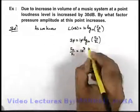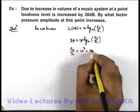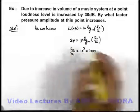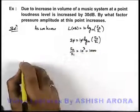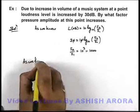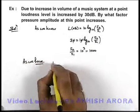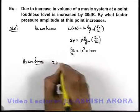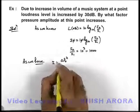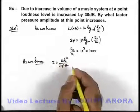From here we get I₂ by I₁ is equal to 10 to the power 3, that is 1000. Now in this situation the ratio of the two intensities is 1000. And as we have the relation between intensity and pressure amplitude as I = ΔP₀² / (2ρB), which we already studied.